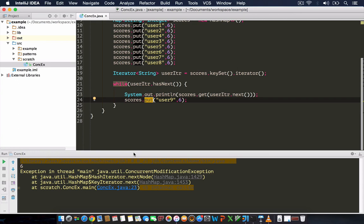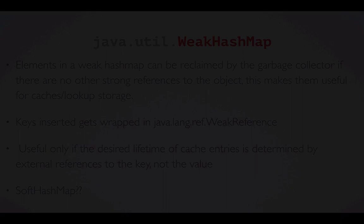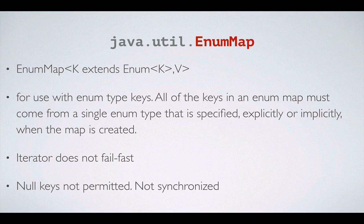Certain map implementations don't fail like this — the iterator does not fail fast. If you create an EnumMap, add some enumeration key-value pairs, and then iterate over the keys while putting something into the map in between, it does not throw a ConcurrentModificationException. That means the iterator does not fail fast.